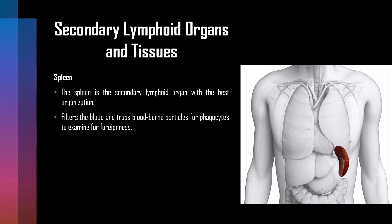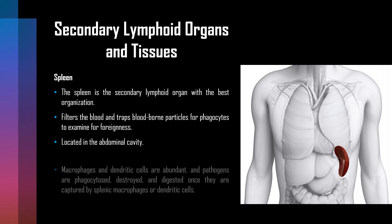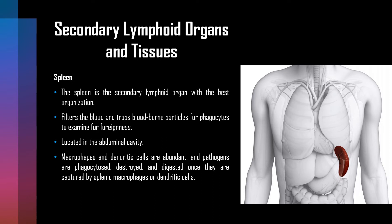The spleen functions to filter blood and trap blood-borne particles to be assessed for foreignness by phagocytosis. Macrophages and dendritic cells are present in abundance, and once a pathogen is trapped by splenic macrophages or dendritic cells, it is phagocytosed, killed, and digested. The resulting antigens are presented to lymphocytes, activating a specific immune response.